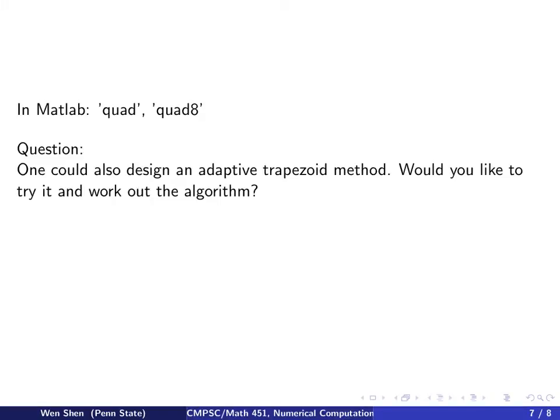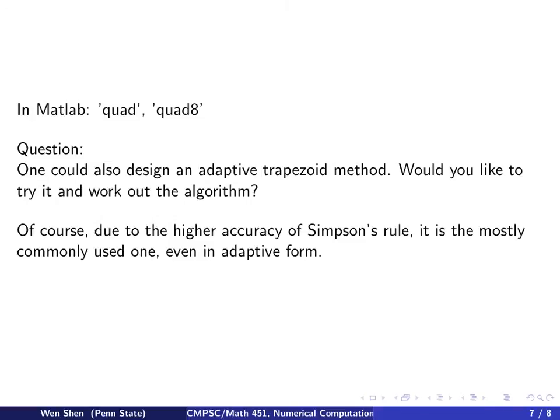Here's a question for you: we designed the adaptive method using Simpson's rule, but the idea does not depend on the specific rule used. For example, how would you design an adaptive trapezoid method? Try to work out a corresponding algorithm and the corresponding a priori error estimates. One final comment: since Simpson's rule has much higher accuracy, it is most commonly used — even in adaptive form, people normally go to Simpson's rule.